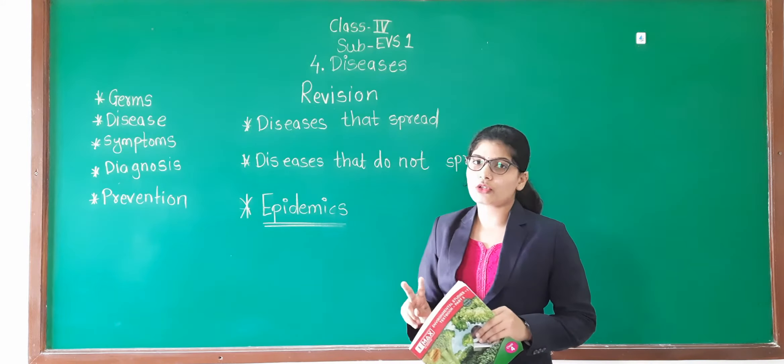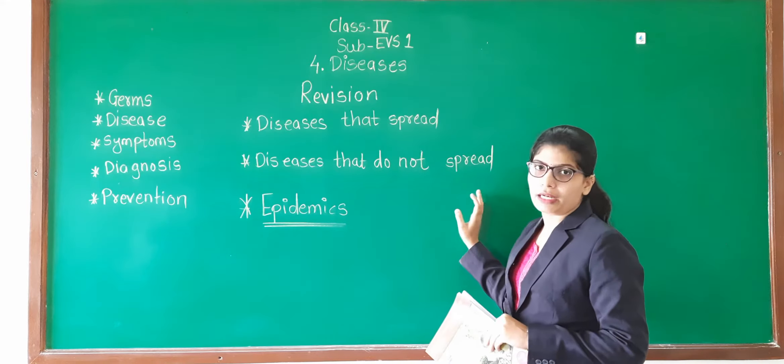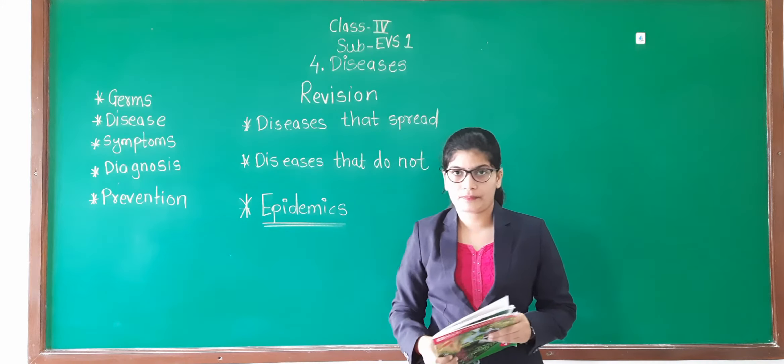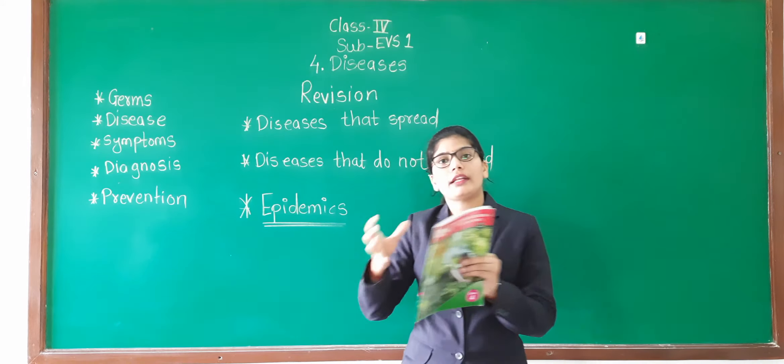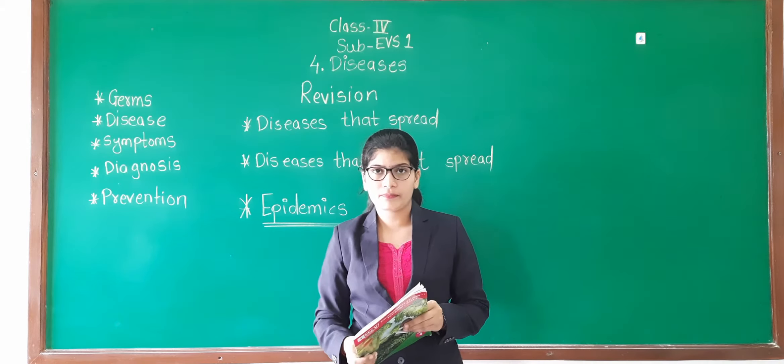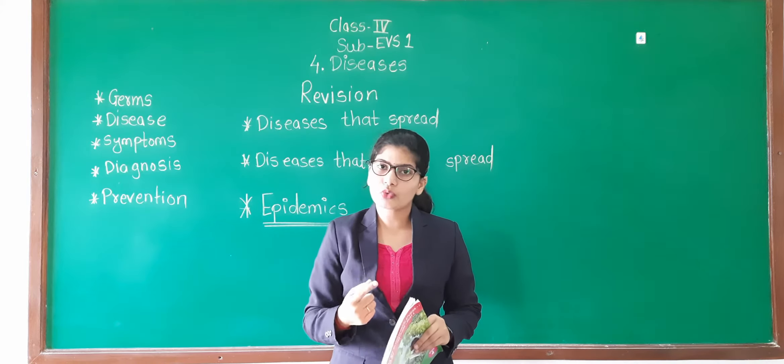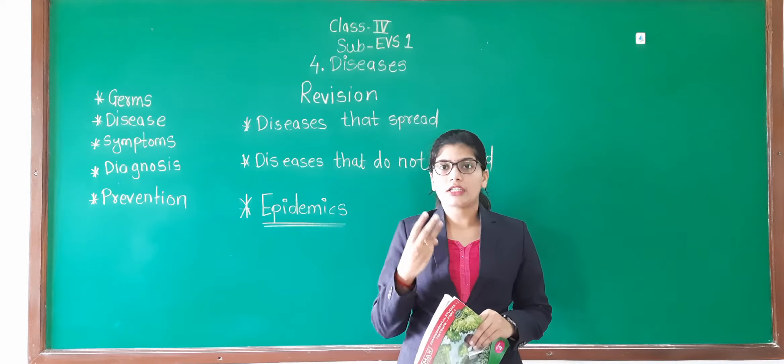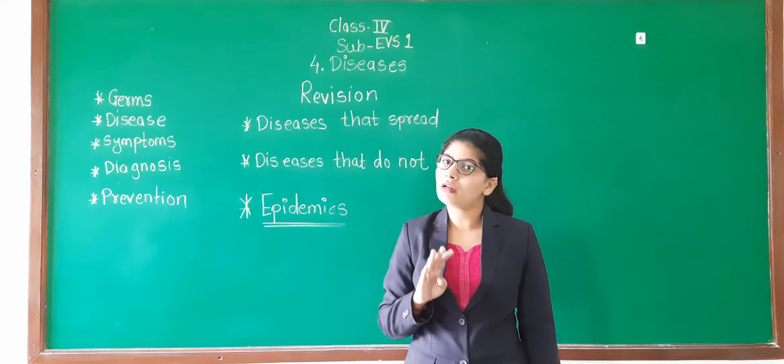Then we have learned two types of diseases: diseases that spread and diseases that do not spread. So in diseases that spread, four ways are there. Now spreading of diseases means what? From one person to another person, there is a traveling of that disease. So there are four ways of spreading: airborne diseases, waterborne diseases, diseases by touching and diseases by insects.